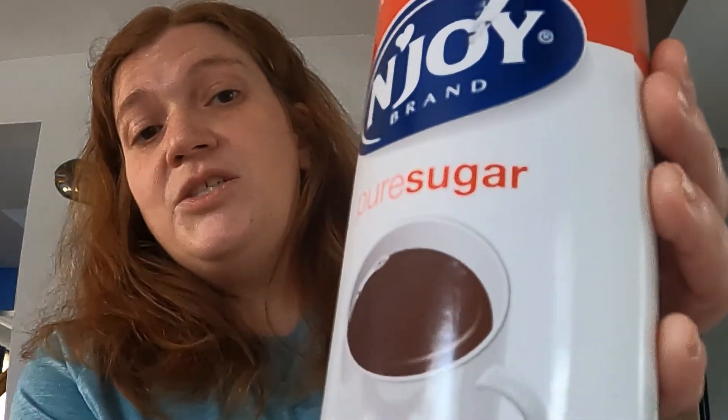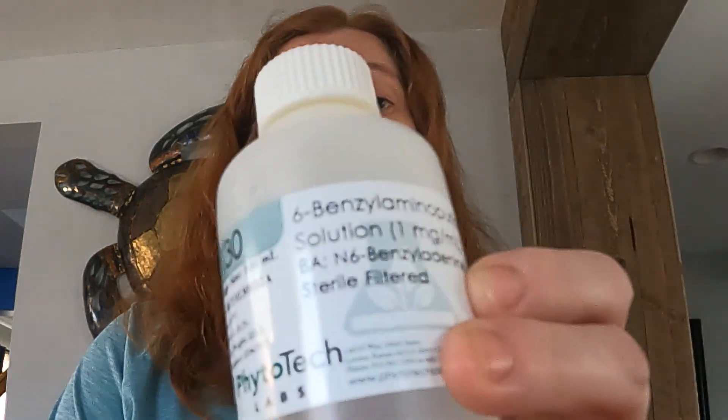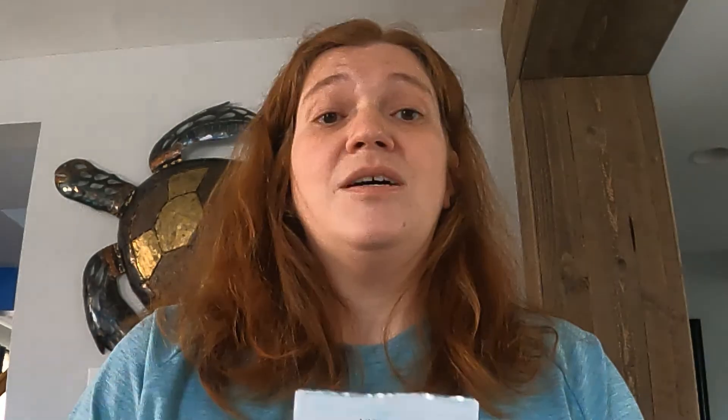The final items that you're going to need are the ingredients for your media, starting with sugar. Any sugar will do as long as it's pure sugar. You'll also need Murashige and Skoog media with vitamins. You will need two plant hormones for the medium that we're making. One is BA and the other is NAA. A gelling agent—I usually use agar, but it requires boiling. So for this demonstration, I'm going to be using Gelzan.